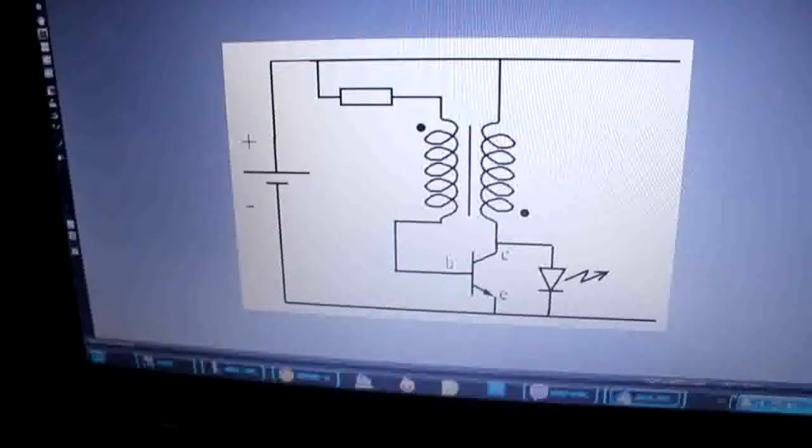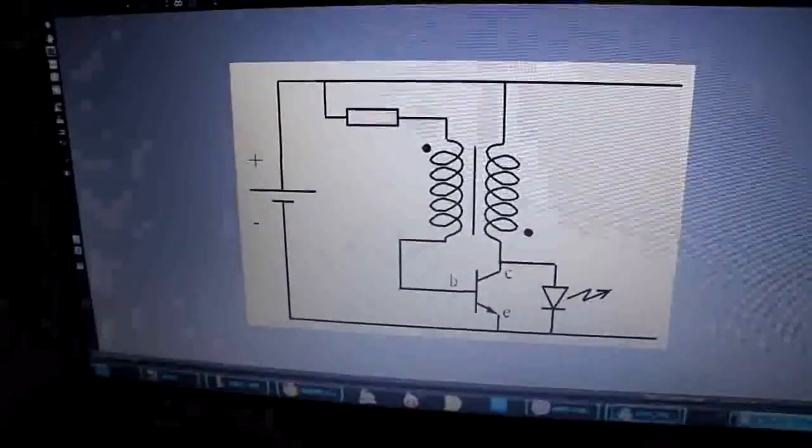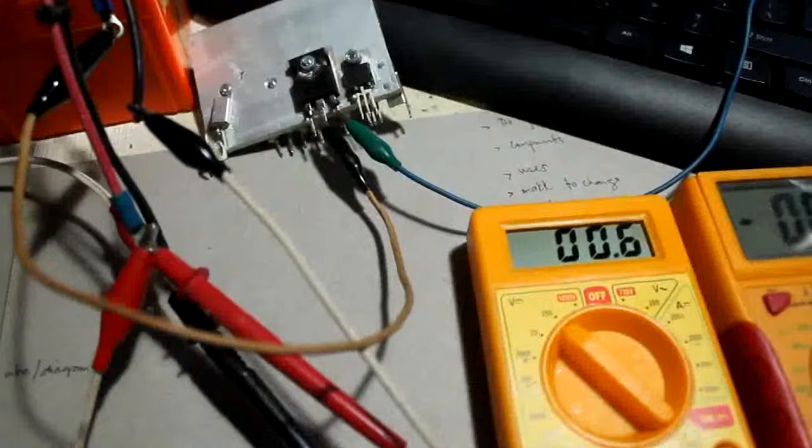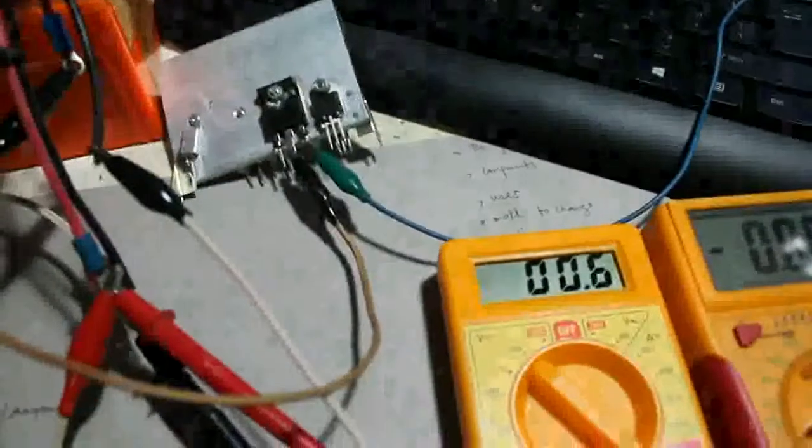And we have here the circuit of the Joule Thief. Okay so this is all about a Joule Thief that could charge from one 12 volt battery to another 12 volt battery.